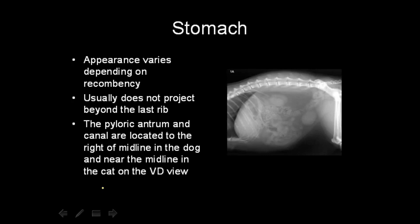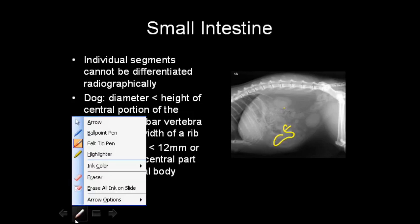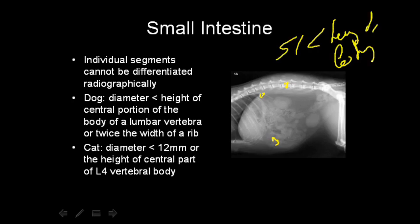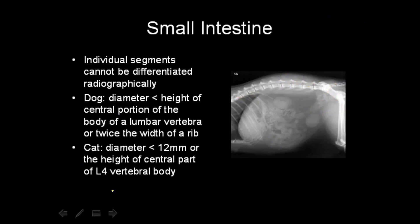The pyloric antrum is near the midline and to the right in dogs, or mostly on the midline in cats on the ventrodorsal view. For the small intestine, we can see loops all over the abdomen and individual segments cannot be identified. The diameter of the small intestine should not be wider than the height of a mid-lumbar vertebral body or twice the width of a rib. In the cat, it should be no more than 12 mm or the cranial-caudal height of L4.